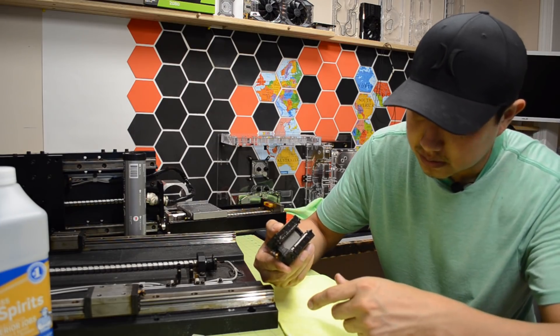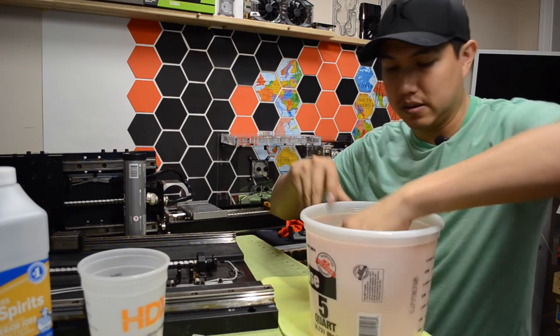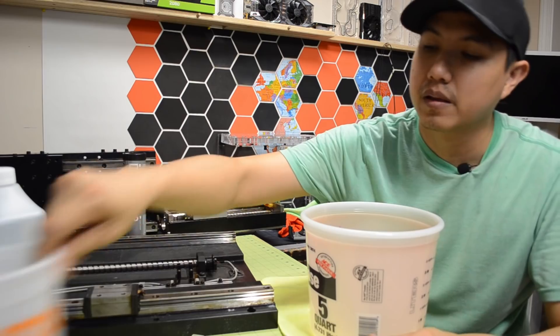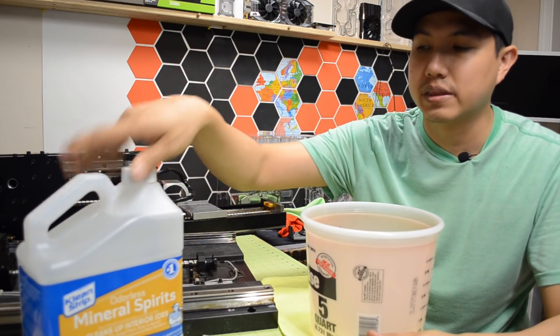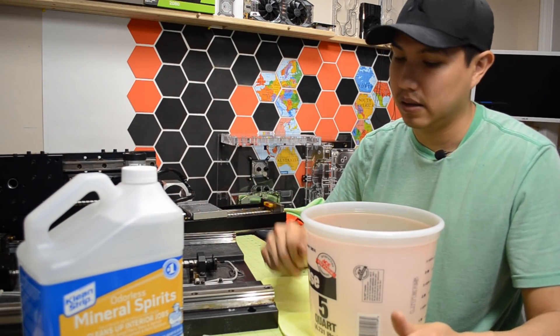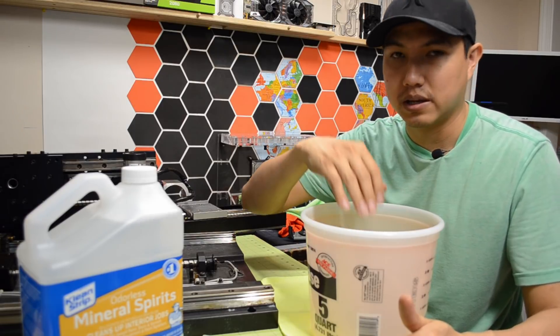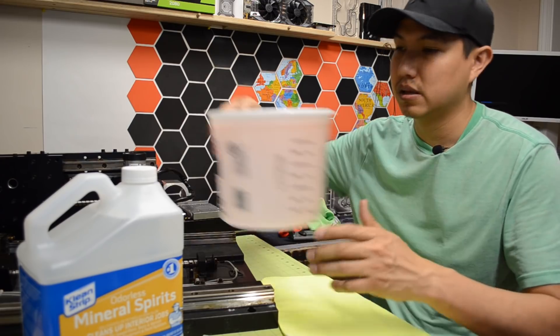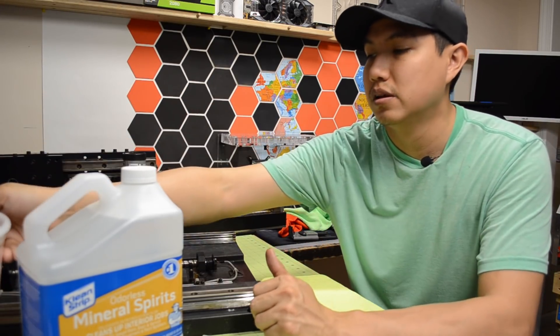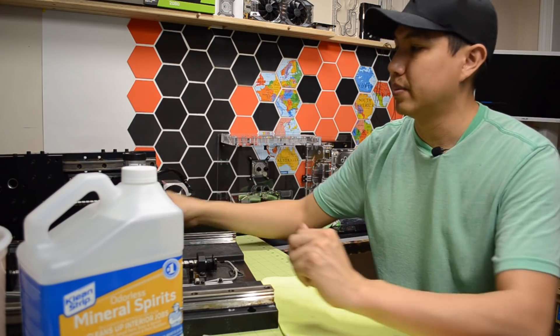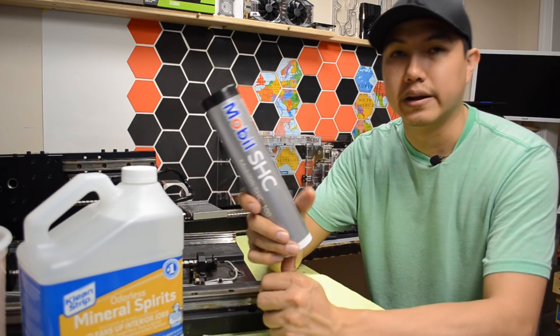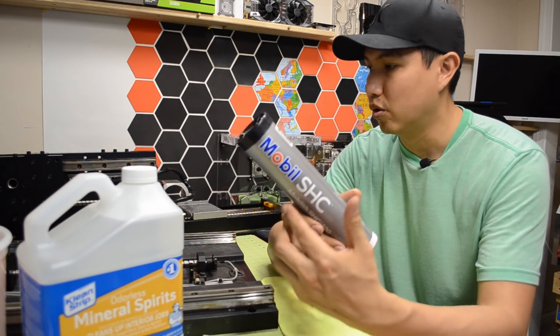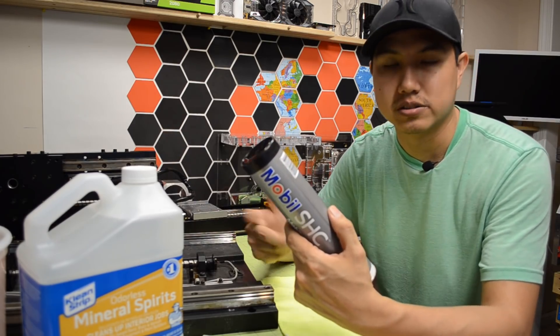So at least nothing came off flying with that mineral spirit. And like I said, once I remove all the grease out of the linear blocks and clean all the rails, I'm just going to finish up by applying new grease to all linear rails and ball screws.